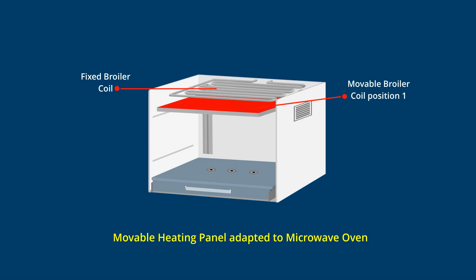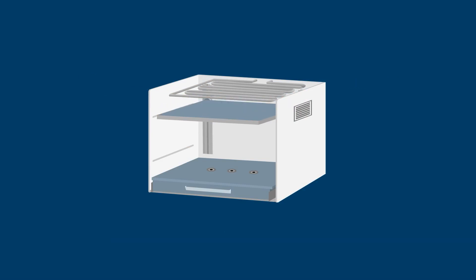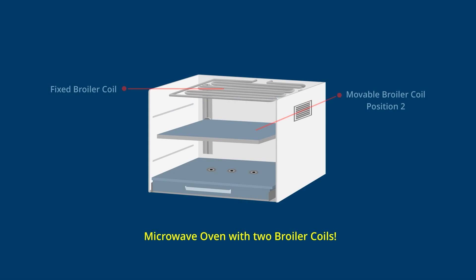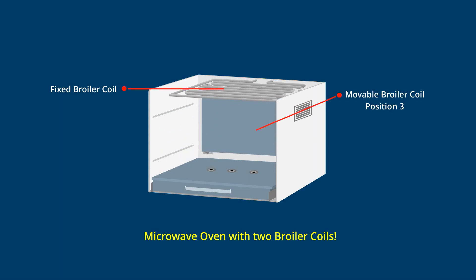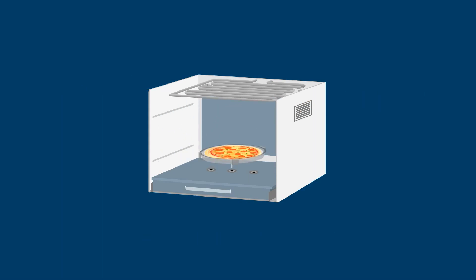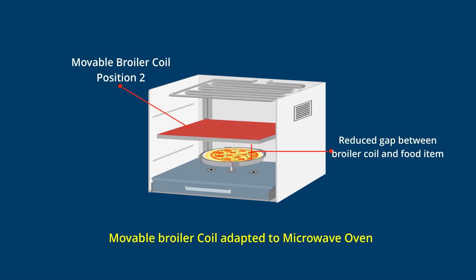The microwave oven now has two broiler coils. The movable broiler coil has three positions: position 1 at the top, position 2 in the middle, and position 3 against the back wall of the microwave oven. When the movable broiler coil is in position 2, the food item is much closer to the broiler coil, eliminating the need for a tall baking stand.